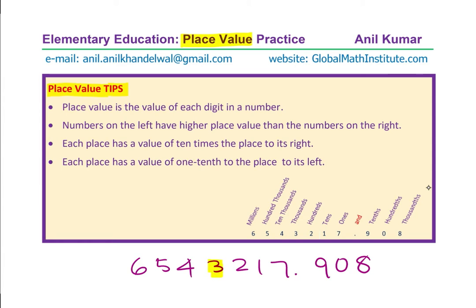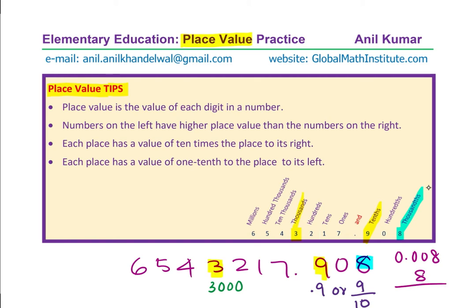For example, the number 3 is placed in the thousands position, and therefore the place value for this digit is 3,000. Number 9 is placed in the tenths position, and therefore the place value of 9 is 0.9 or 9 over 10. Similarly, the number 8 is placed in the thousandths position, meaning 8 times 1 over 1,000. So this position is 0.008, or 8 over 1,000 — that is why we call it thousandths.